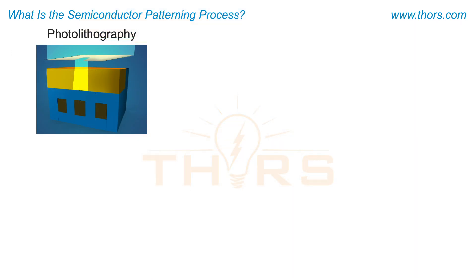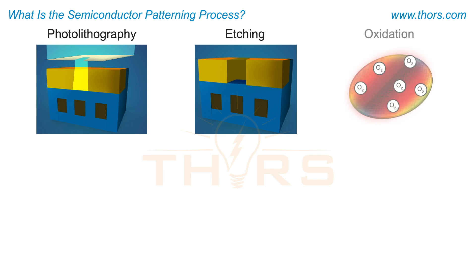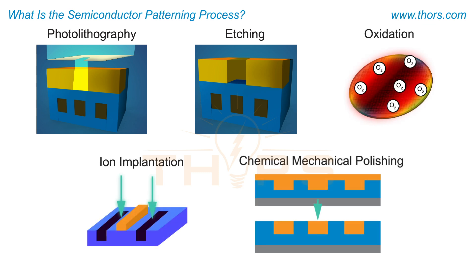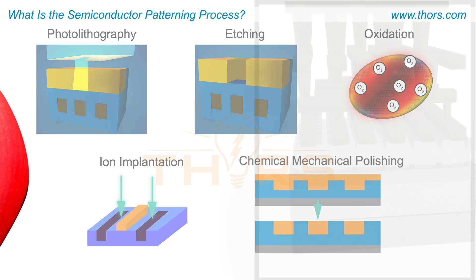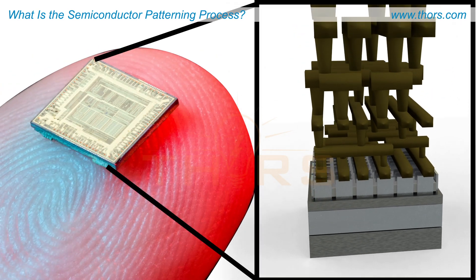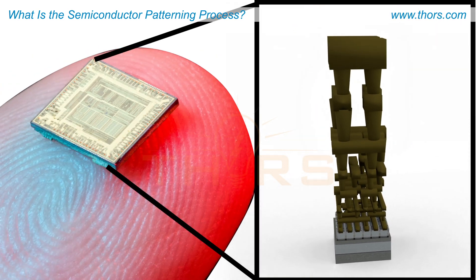Photolithography, etching, and other processes such as oxidation, ion implantation, and chemical mechanical polishing are performed several times on each layer of a wafer, gradually transferring the entire circuit design onto the wafer.